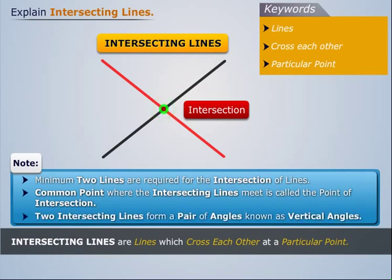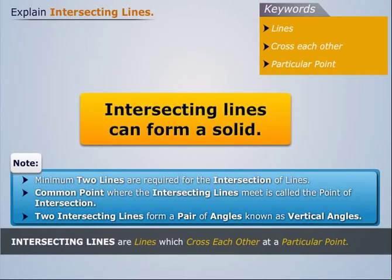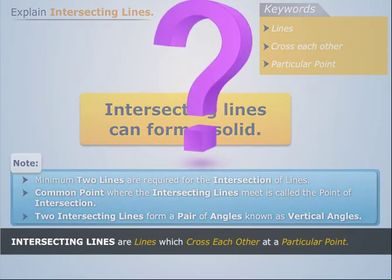Two intersecting lines form a pair of angles known as vertical angles. Intersecting lines can form a solid. Let us understand how.